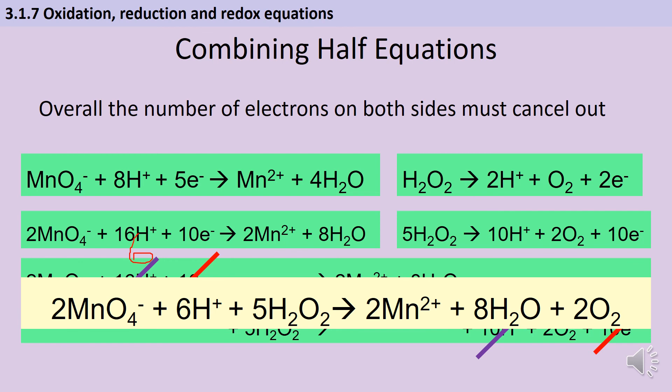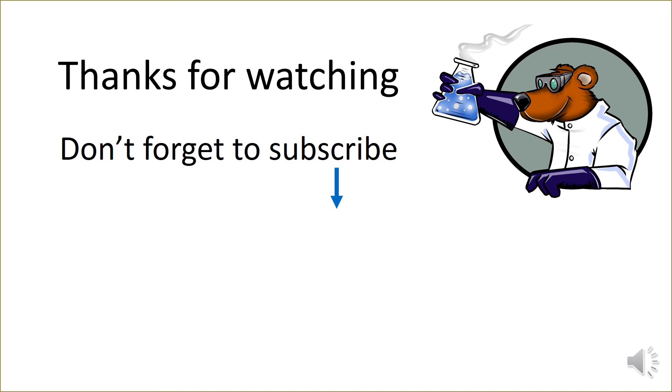So my overall equation for this reaction is going to be two manganate ions, six hydrogen ions, five hydrogen peroxide and I'm going to be left with two manganese ions, eight water molecules and two oxygen molecules. I hope that made sense and you're ready to start on some practice questions. Thanks for watching and don't forget to subscribe.